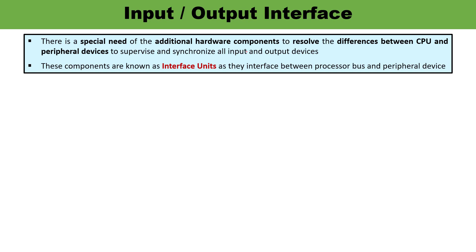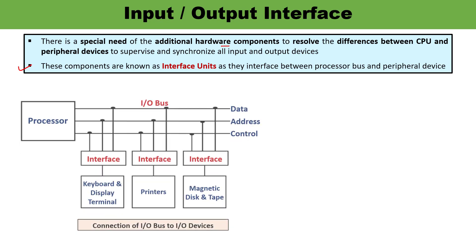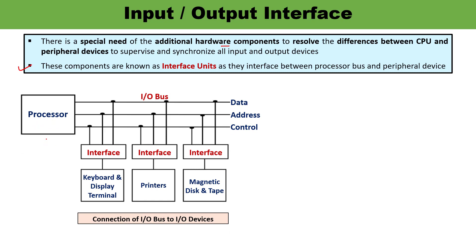A hardware component called an interface unit resolves the differences between the CPU and the peripheral. As many peripherals as are required, that many interface units are required — there cannot be any common interface unit between multiple peripherals. As you can see in this diagram, there is a processor with several peripherals: keyboard, display terminal, printer, magnetic disc and tape — and each peripheral has a dedicated interface and its own controller.